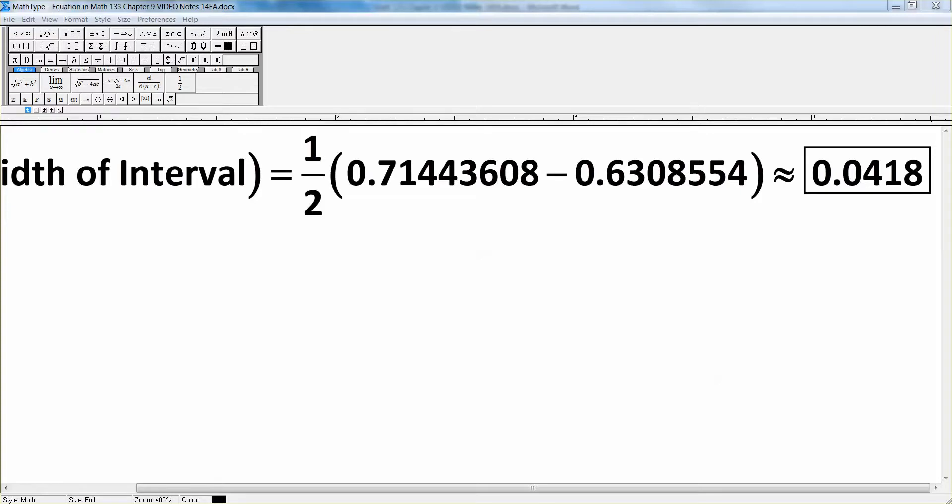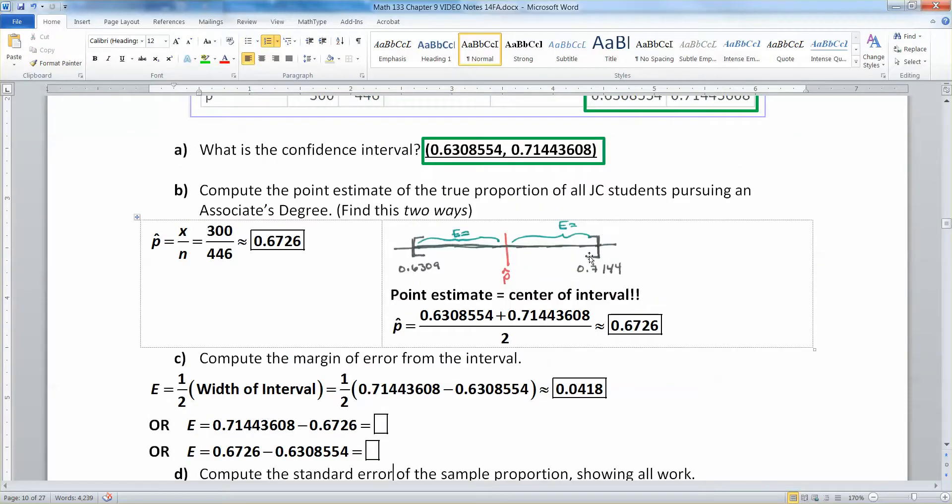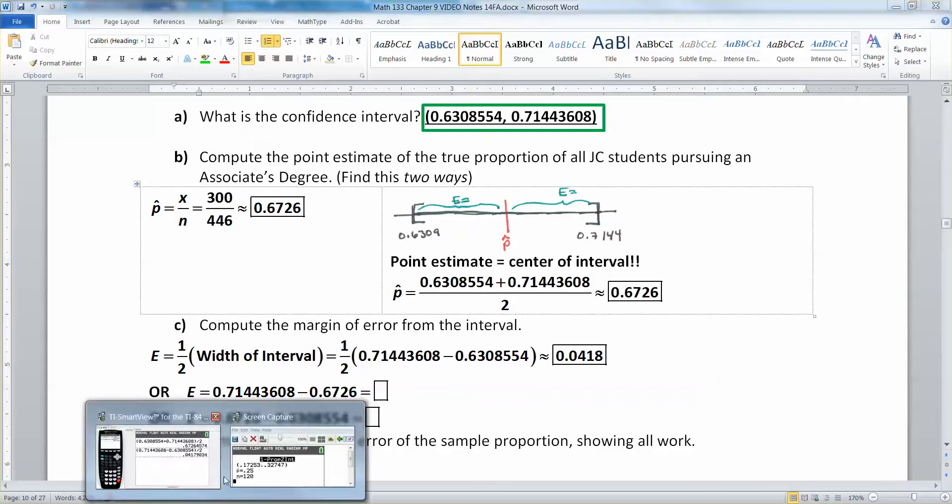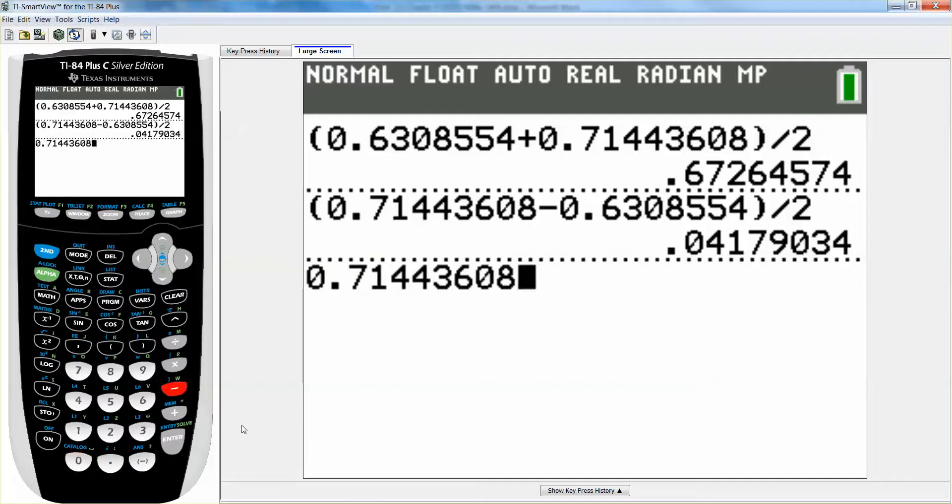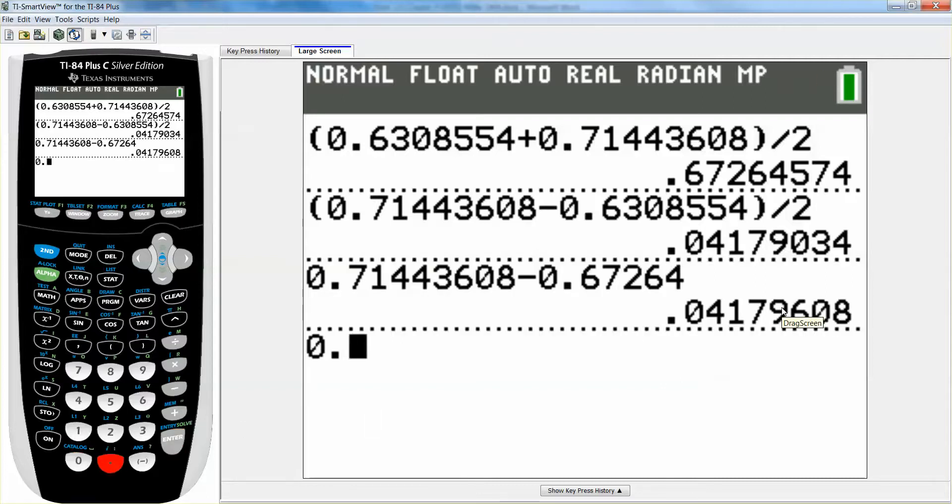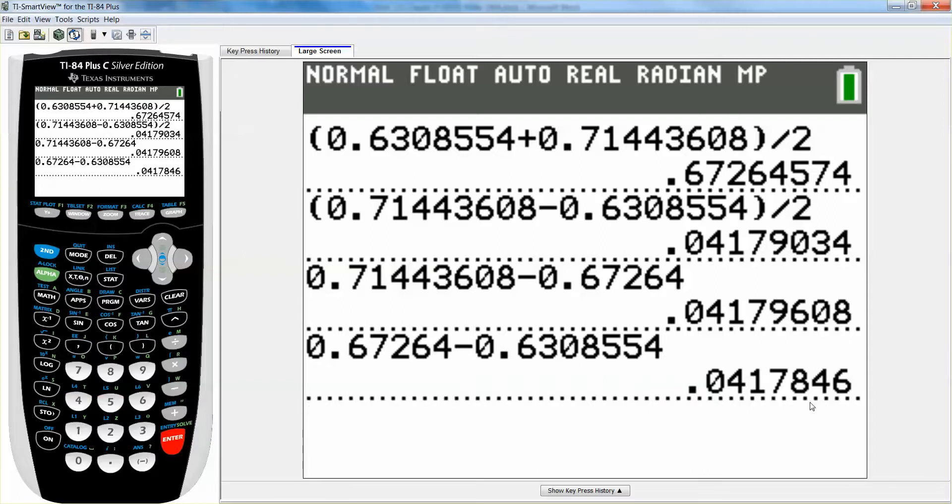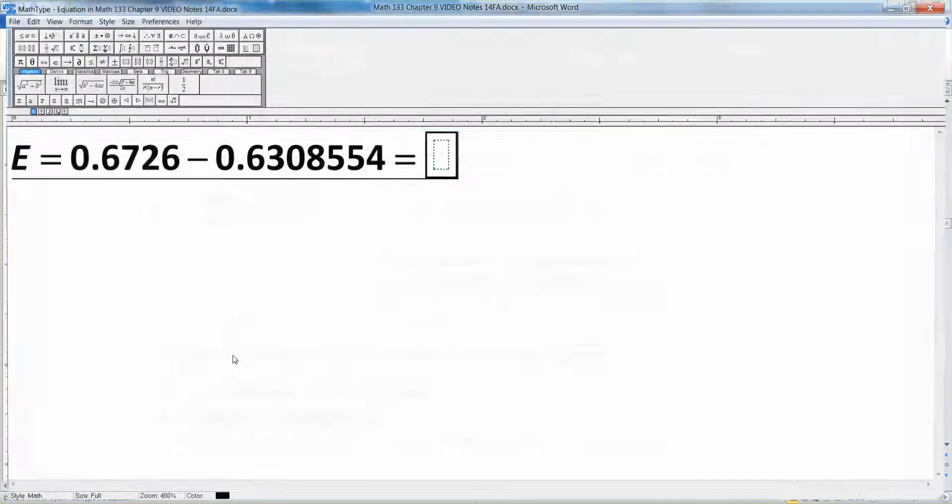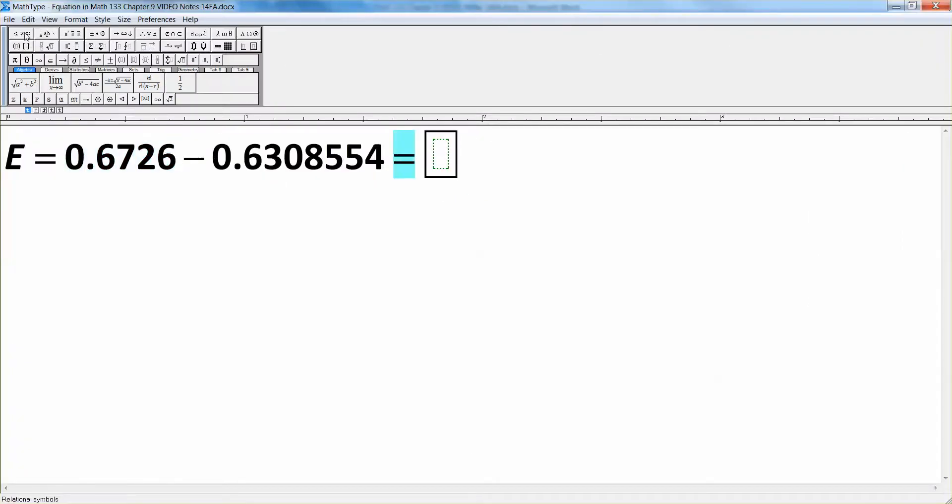Let's find it another way. We could also find it by taking the high number, 0.7144, and subtracting that middle p-hat in the center, because the error is the distance from the high to the middle. If I take 0.71443608 and subtract away the center, which is 0.67264, I'll get 0.0418 that way. Or I could do 0.67264, take away 0.6308554, the low end. So the middle, take away the low number, and again, I get about 0.0418.